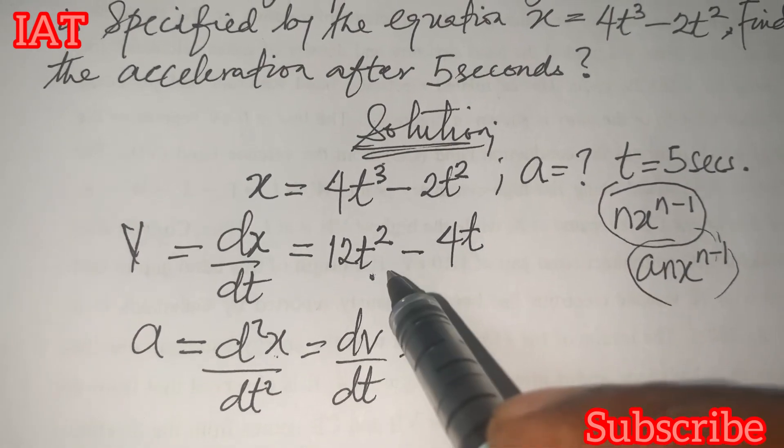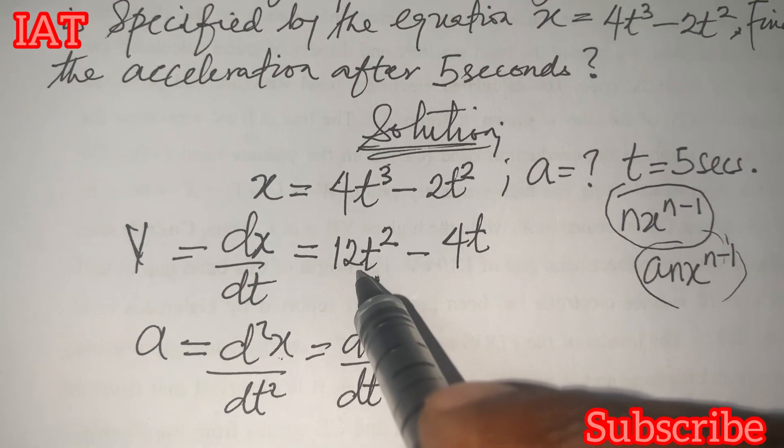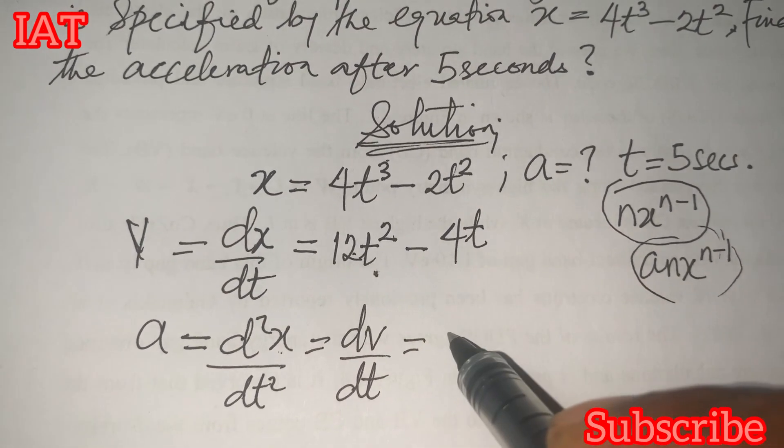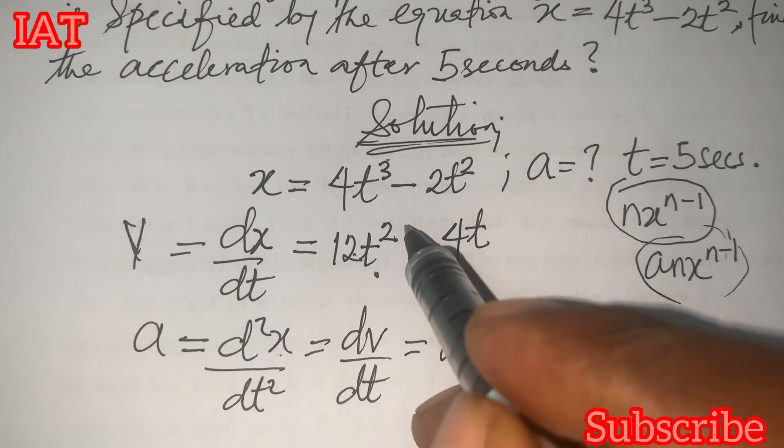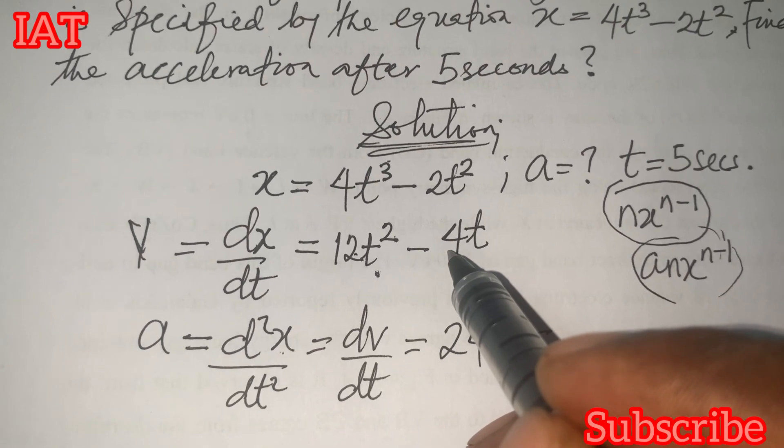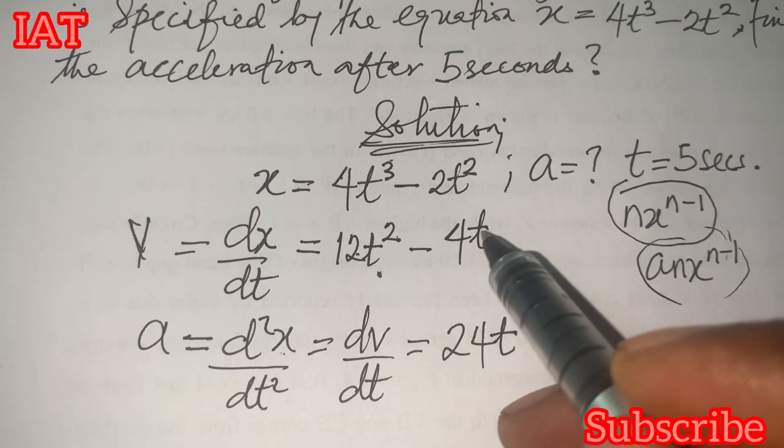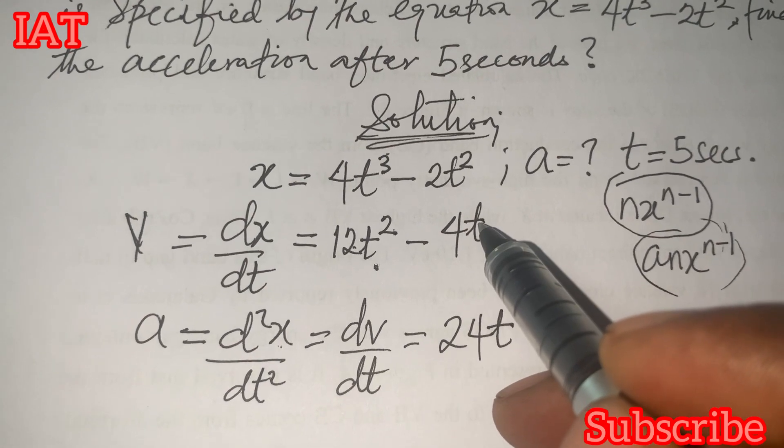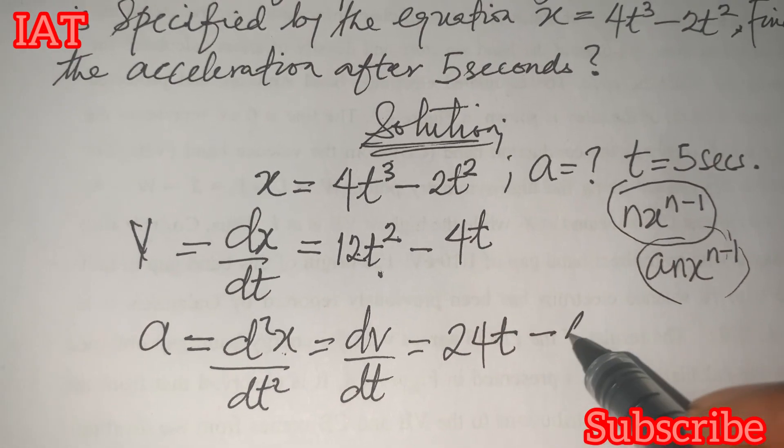So, that means we need to differentiate this again. And the differentiation of 12t², if you multiply this 12 by 2, you have 24. And if you subtract 1 from 2, you just have t left. Minus. Differentiation of 4t, you don't differentiate a constant, but differentiation of t itself is 1. So, 4 times 1 is 4.